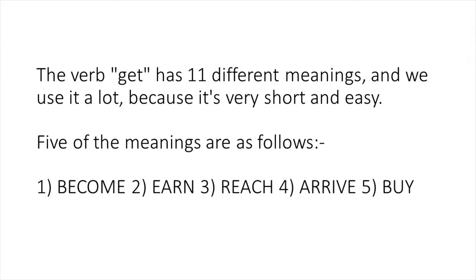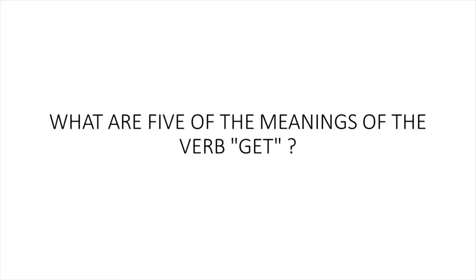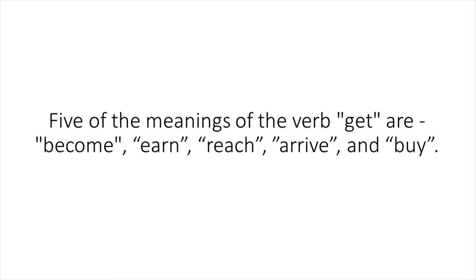Get. The verb 'get' has eleven different meanings, and we use it a lot because it's very short and easy. Five of the meanings are as follows: one, become; two, earn; three, reach; four, arrive; five, buy. What are five of the meanings of the verb 'get'? Five of the meanings of the verb 'get' are become, earn, reach, arrive, and buy.